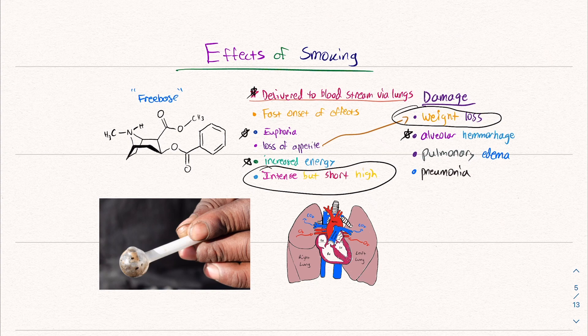And more damage, alveolar hemorrhage. So in our lungs, we have these little sacks where gas is exchanged. When we breathe air, it gets to our bloodstream. Those sacks can bleed out, which cause a whole host of issues. Pulmonary edema, fluid in your lungs, pneumonia, and there's a lot more. The list goes on and on. The whole idea is you don't want to consume any of this stuff from powder cocaine to crack cocaine. It is not a good idea whatsoever.